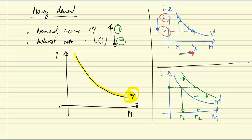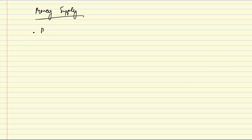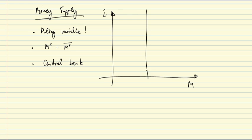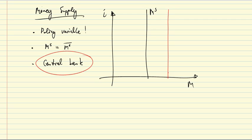Next, we talk about money supply. The money supply is a policy variable — it is assumed to be constant, MS equals MS-bar, and is determined by the central bank. In our i-M space, the money supply is simply a vertical line. If the money supply changes due to a policy change by the central bank, we would get an increase in the money supply, moving from MS1 to MS2.